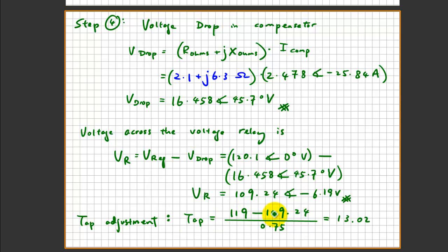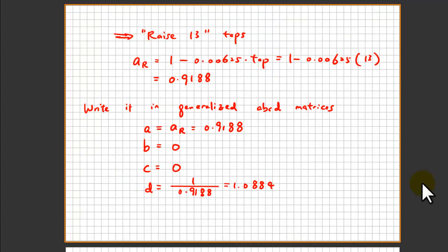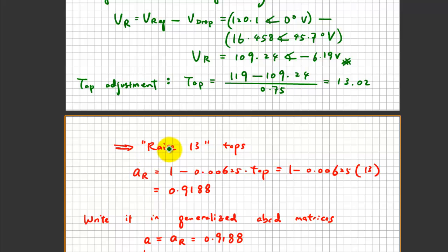That gives 13.02, so approximately 13 tap changes are required. Using 1 − 0.00625 × tap, the adjustment ratio A_R is 0.9188. This is below the lower bandwidth bound of 119 V, and since the maximum is 32 steps total (16 up, 16 down), we only need 13 steps in this case to bring the voltage within the bandwidth.